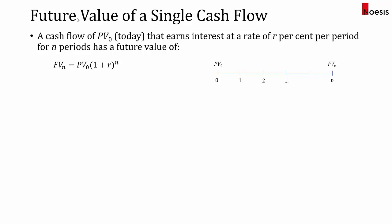First, let's talk about the future value of a single cash flow. If today you have a cash flow — PV sub zero — which you invest today to earn interest at a rate of R% per period for a total of N periods, then the value at the end of year N is FV sub N, which equals PV sub zero multiplied by (1 + R) to the power of N.